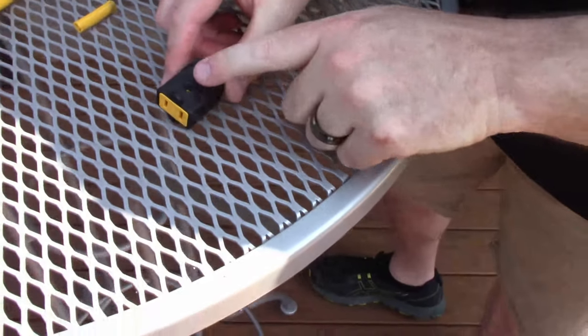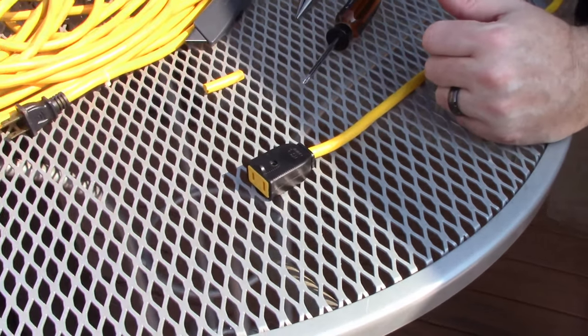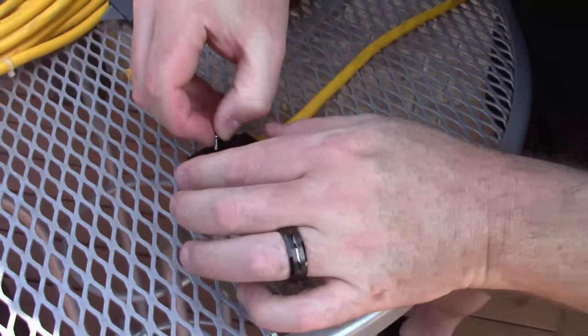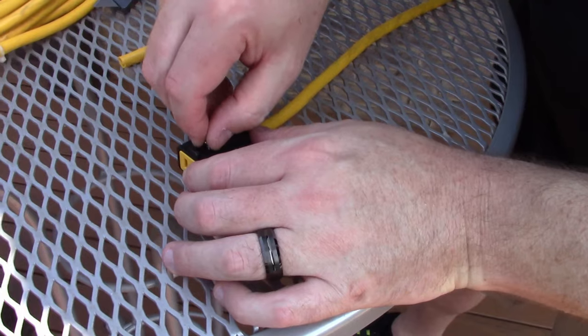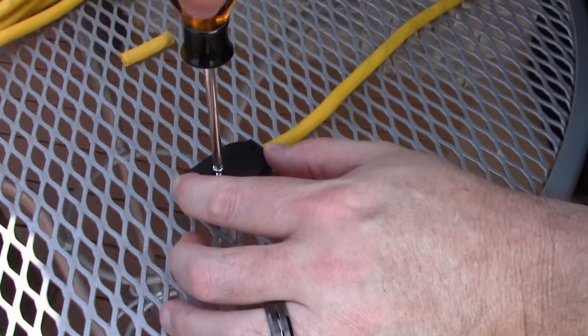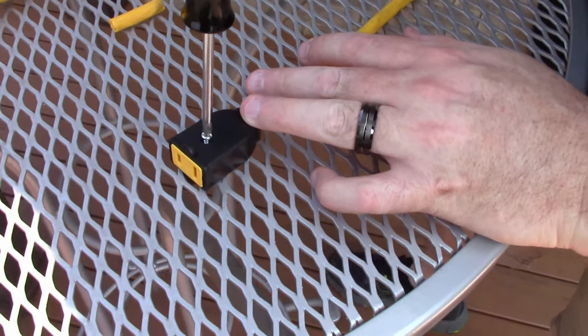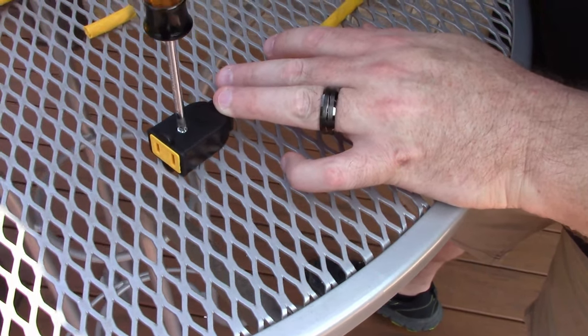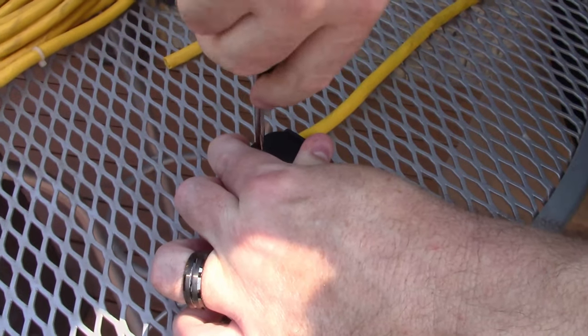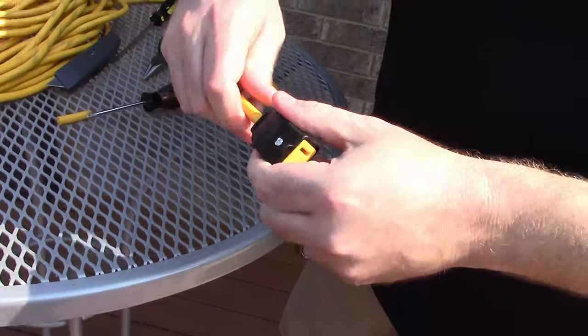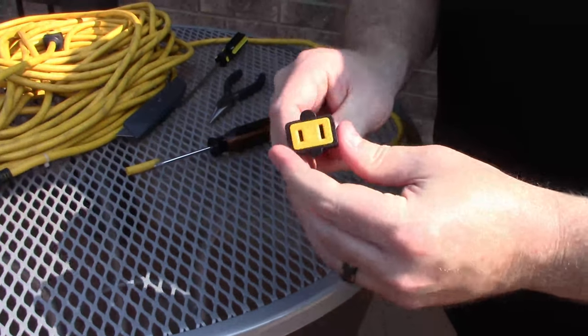Now that we have everything installed, we're going to reinstall the set screw that I had in my pocket. We'll tighten it with the Phillips screwdriver. Check all the connections. That's not going to come out. Everything is nice and tight.